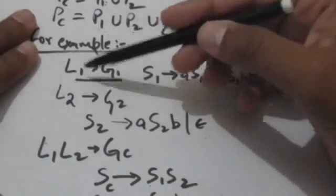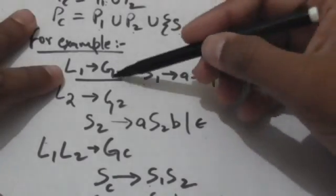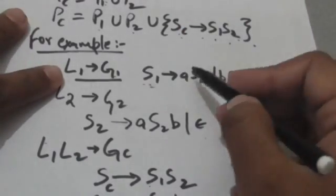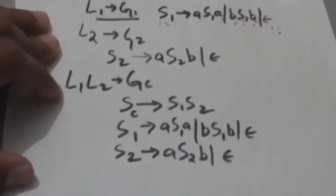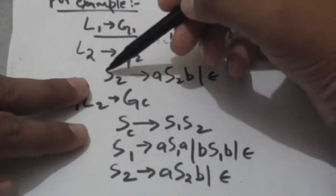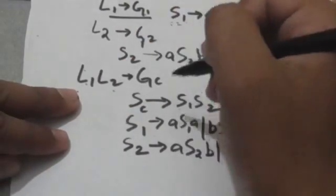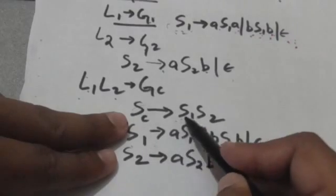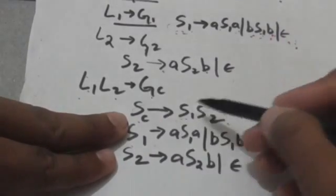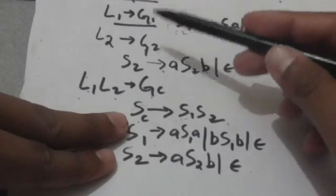Suppose there is a context-free language L1 whose grammar G1 contains: S1 derives A, S1 A; S1 derives B, S1 B; S1 derives empty string. Another context-free language L2 has grammar G2 with productions: S2 derives A, S2 B, S2 derives empty string. Since L1 and L2 are context-free languages, L1·L2 is also a context-free language with grammar GC. GC contains all productions of G1 and G2, and the production Sc derives S1 S2, where Sc is the start symbol of GC.